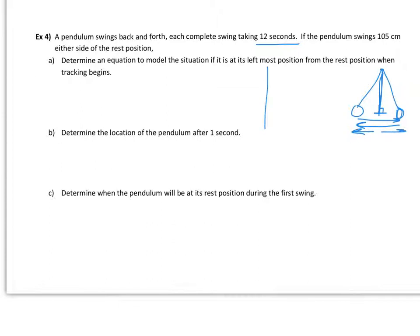Determine an equation to model the situation if it's at its left most position from the rest position when tracking begins. I would have displacement being zero would be my rest position. I would be at negative 105 centimeters when I'm at the left most position, and positive 105 centimeters at the right most position. So I'm looking at my sinusoidal curve. That's a period of 12 seconds, 6 for the midpoint. This would be negative 105, positive 105 up here, and we can come up with an equation. We need to have some let statements, D for displacement, T for time.